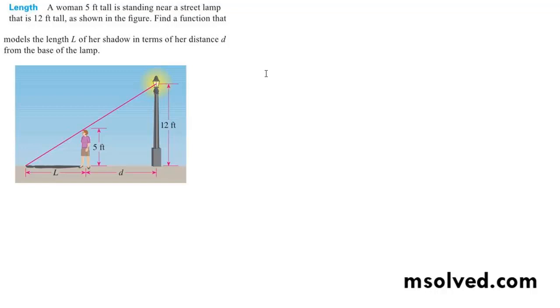We have a triangle here and we want to represent the distance or the length L in terms of distance D. So what we're going to do here is cross multiplication.